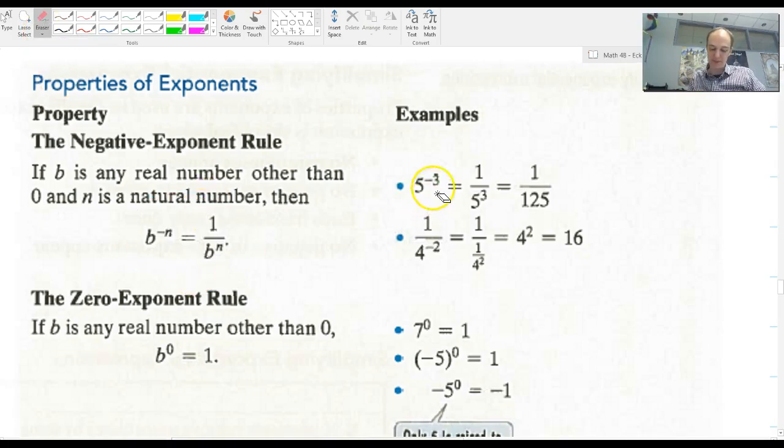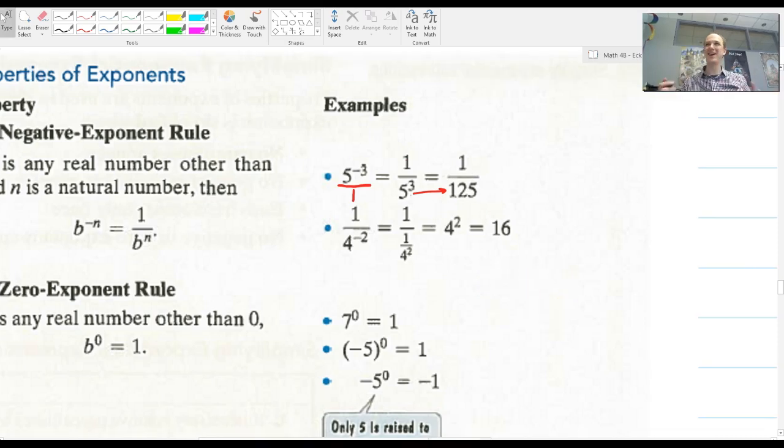So, specific example number 1 says 5 to the negative 3, and it says that what should you do with it? Well, you should do 1 over 5 to the 3rd. So, it seems like any time we have a negative on top of a fraction, that is like 5 to the negative 3 over 1, you flip that fraction over, you take its reciprocal, and then you can evaluate 5 to the 3rd as 125. Whether or not you evaluate it, that's kind of up to you. Sometimes you clearly don't want to do it.